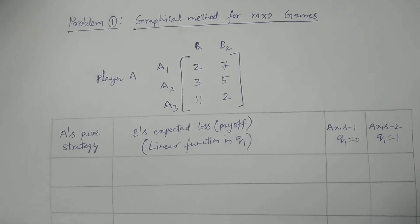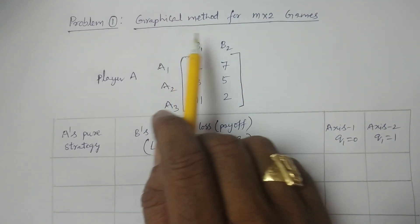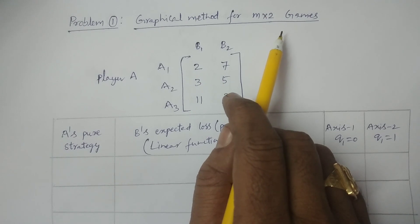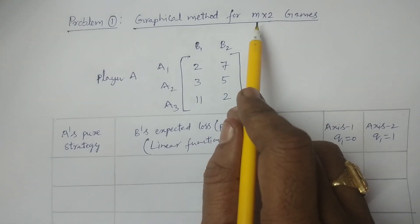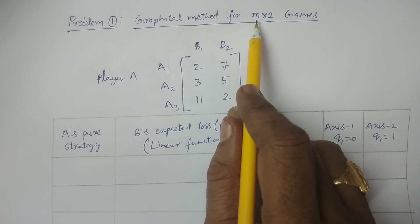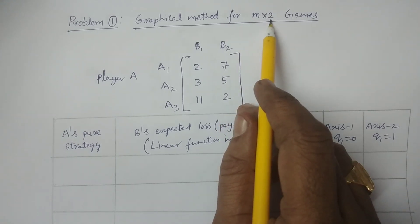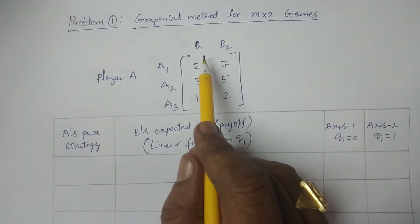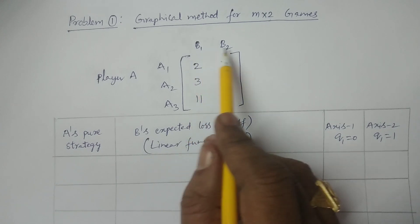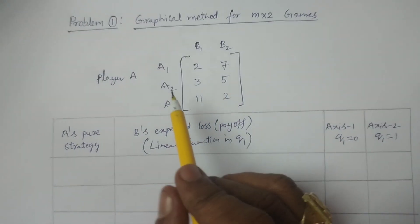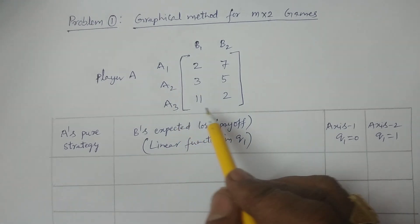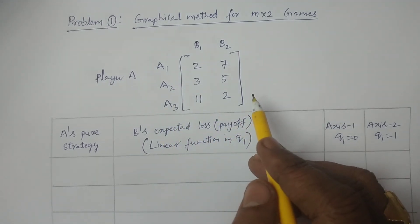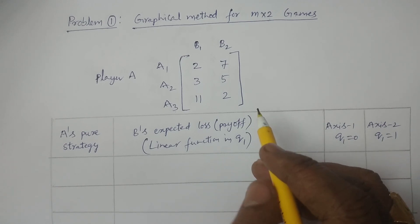Welcome to BSc statistics students. In this class I explain one problem in graphical method for m by 2 games — which means player A has more than two strategies and player B has only two strategies. Here, player B has two strategies B1 and B2, and player A has three strategies A1, A2, and A3. This is the payoff matrix. You have to solve this problem by using the graphical method.